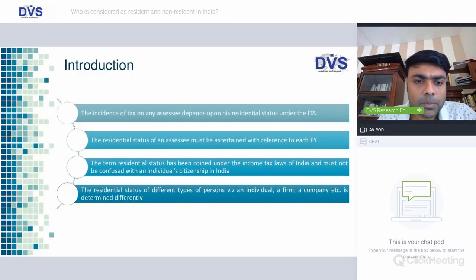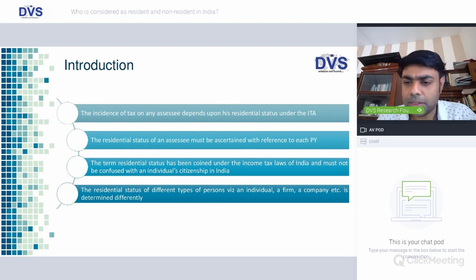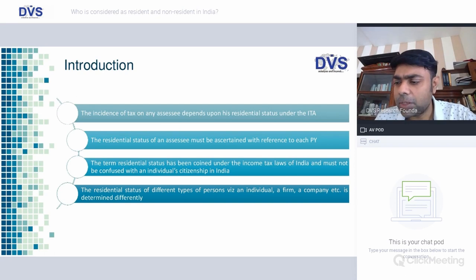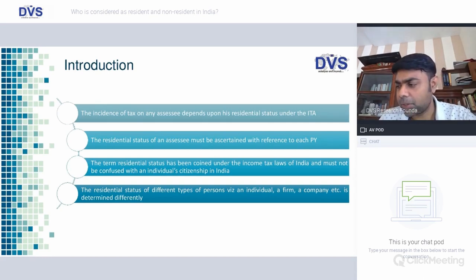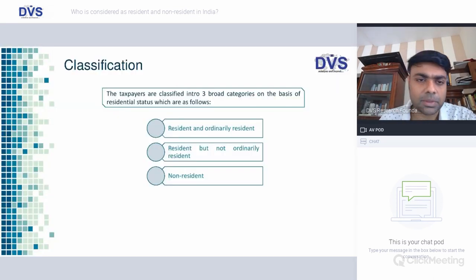Why do you need to understand the term 'resident'? It has a significant impact on how someone gets taxed. Residents have the fundamental right to be taxed in the country of residence, and that country has a right to extract revenues. The challenge comes when people operate across jurisdictions — which country has a right to tax that money? That's why we have globally accepted principles, and DTAs clearly specify how conflicts have to be resolved when more than one jurisdiction has a residency claim.